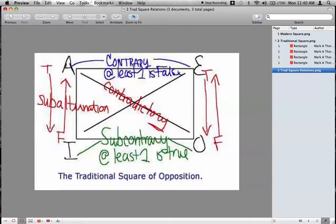The subcontrary is the idea that at least one of them is true, but they're not both false. And truth flows downward, and falsity flows upward. Truth flows downward, and falsity flows upward. So, you can use this square of opposition to test whether or not propositions are correct.